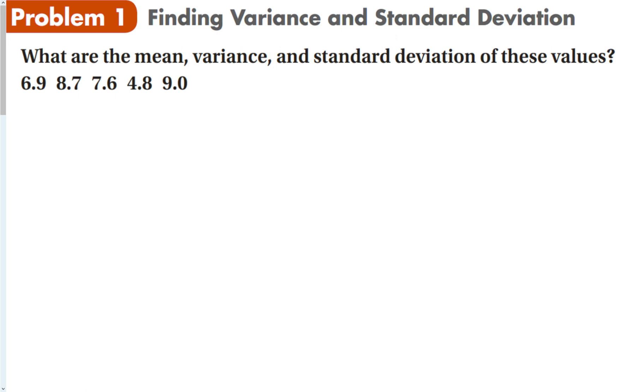What are the mean, variance, and standard deviation for these five numbers? The first thing we're going to do is find x bar, the mean. That's 6.9 plus 8.7 plus 7.6 plus 4.8 plus 9.0, all divided by five. We get 7.4. That is the mean, that is x bar.